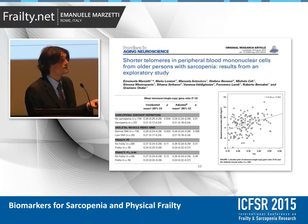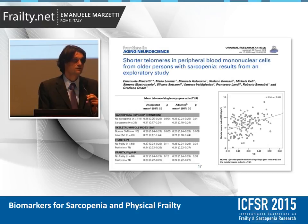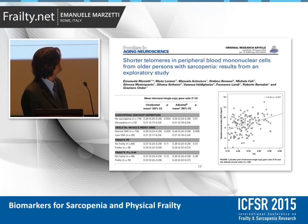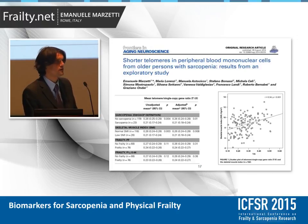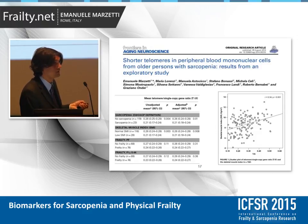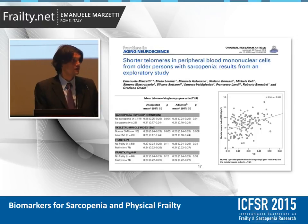There are also biomarkers that are completely unrelated to muscle but are linked to the aging process. This is a study we published last year, where we showed that telomere length in peripheral blood mononuclear cells is correlated with muscle mass in outpatient geriatric patients. It is worth noting that telomere length was not related to frailty by Fried criteria or frailty by Rockwood, once again underlining the limitations of currently available definitions.